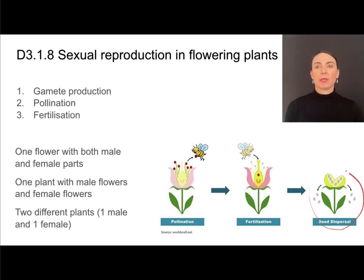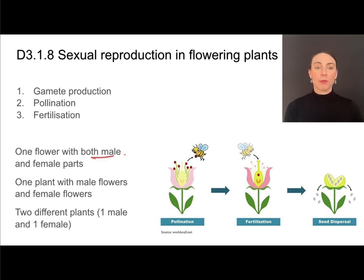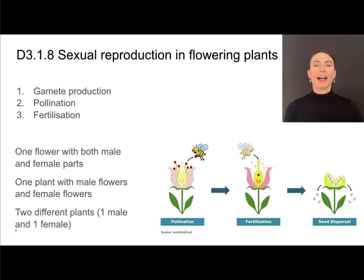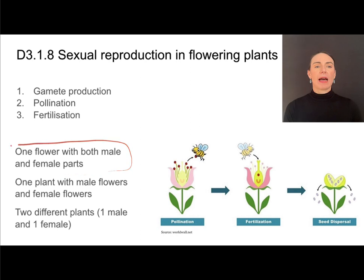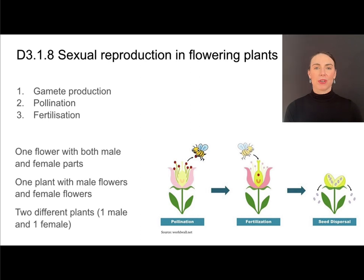Seed dispersal would be something that's happening after fertilization takes place. There are multiple types of plants that produce sexually. You could have one flower that has both male and female parts, or one plant that has male flowers and separate female flowers, or some plants even have separate male and female plants. We'll be focusing on flowers that have both male and female parts for simplicity, but it's important to know that there are other arrangements.